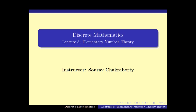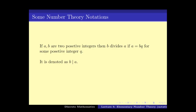Number theory is something that all of us have used or seen in our high school or colleges. We have seen integers and we have seen divisions. Let's start with the simplest operation: if you are given two positive integers a and b, then we say b divides a if a can be written as b times q, where q is some positive integer. The notation we use to denote it means b divides a. If a does not divide b, it is denoted using a vertical line struck out, and it reads as a does not divide b.